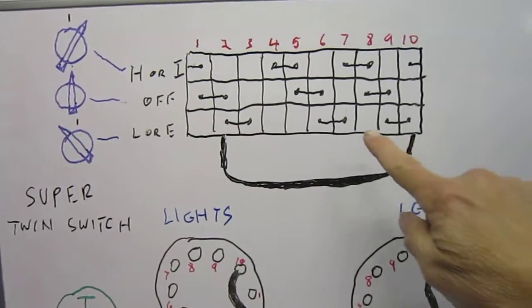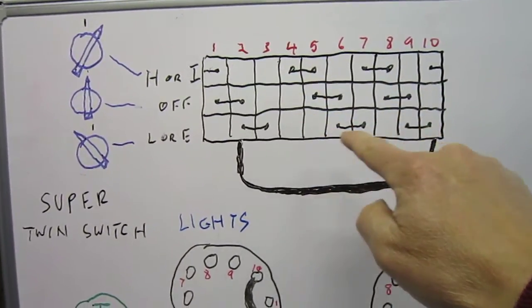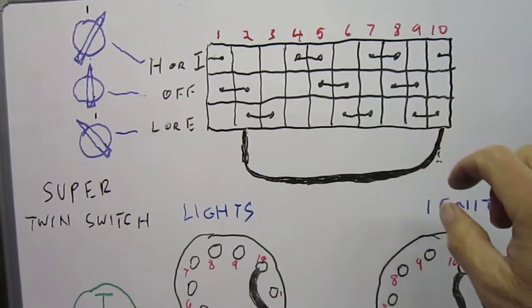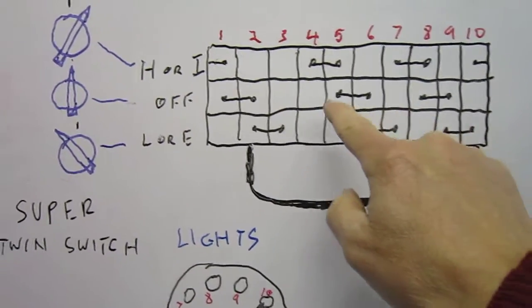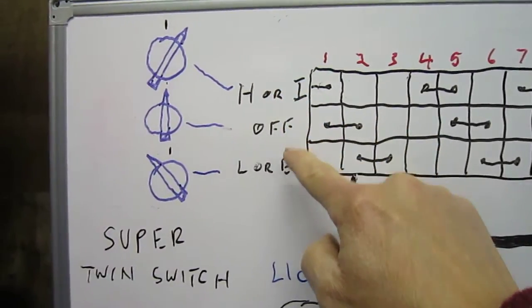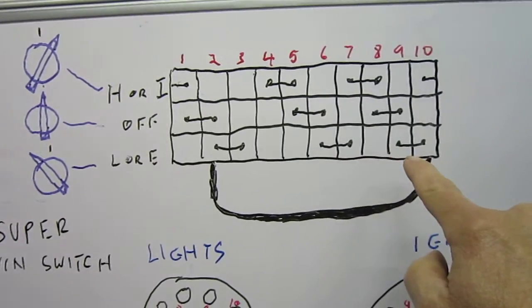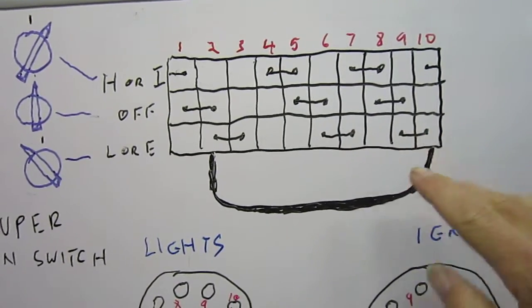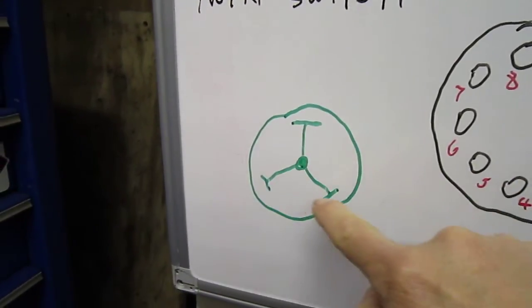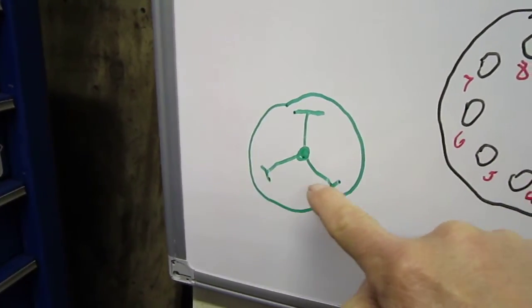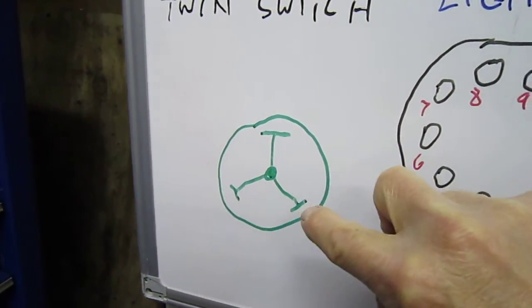This is similar to the schematics you get on Japanese wiring diagrams, a much better system when you think about it. If you see all the contacts, you've got H or I, off, and lights or emergency. When you look at it and lay it out like this, it's obvious. The fact that the switch inside is like a CND sign with three contacts on it, and as you turn it one way, it'll contact two there, two there, two there.